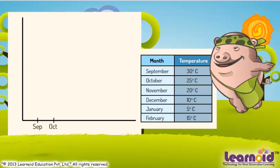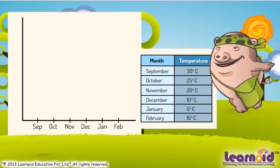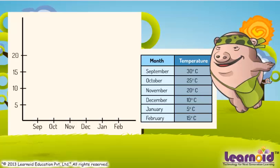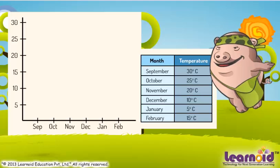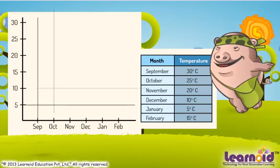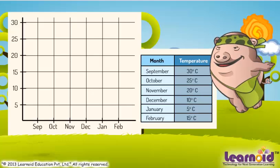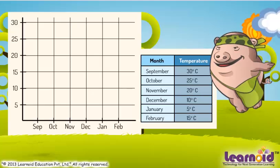We divide the horizontal line according to months and write the name of months. Similarly, we divide the vertical line into temperatures. Now we draw horizontal and vertical lines for all divisions of the Axes. Our graph sheet is ready.